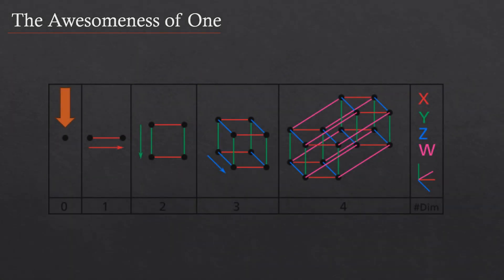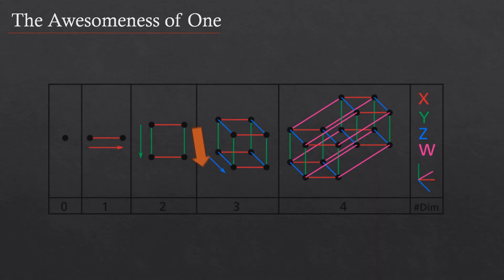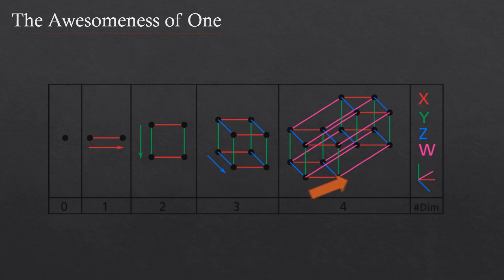We begin with a point and travel a specific distance in one direction to get a line in one dimension. We then turn 90 degrees and travel that same distance to get a square in two dimensions. Next, we turn 90 degrees again to obtain a cube in three dimensions, and theoretically, we can turn another 90 degrees to form a tesseract in four dimensions, and so on.